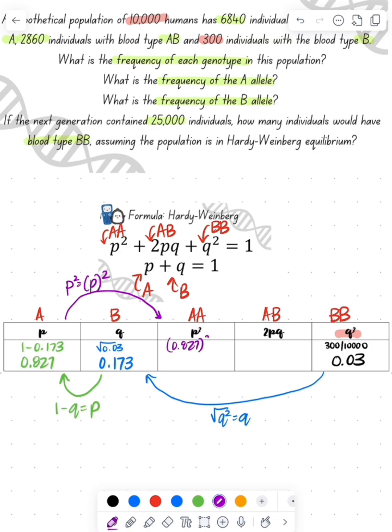So now if I want to find my P squared, I just square whatever P is. So 0.827 squared is 0.684.